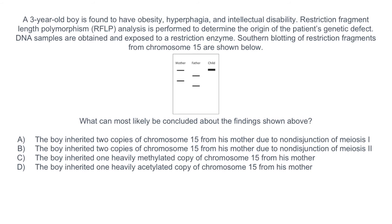A: the boy inherited two copies of chromosome 15 from his mother due to non-disjunction of meiosis 1. B: the boy inherited two copies of chromosome 15 from his mother due to non-disjunction of meiosis 2. C: the boy inherited one heavily methylated copy of chromosome 15 from his mother. Or D: the boy inherited one heavily acetylated copy of chromosome 15 from his mother.